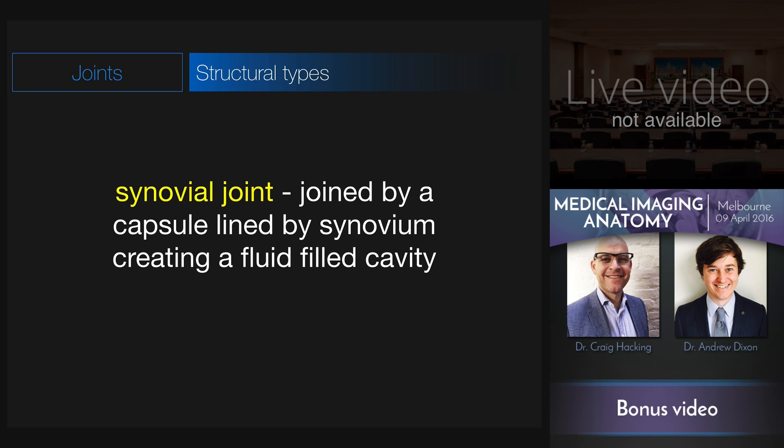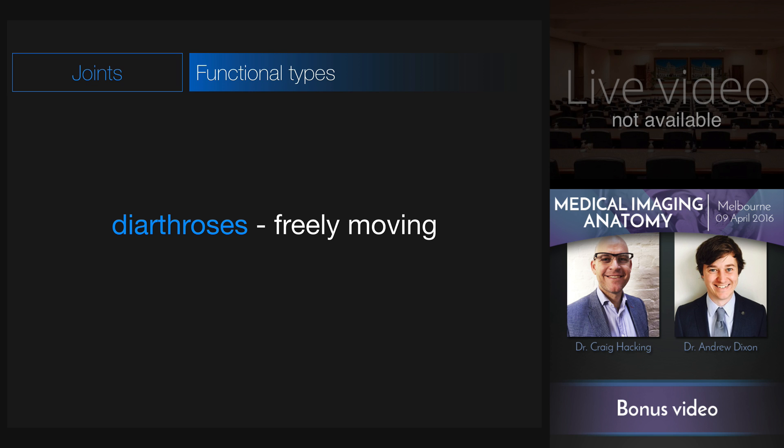Now let's move on to the final form of structural joint, the synovial joint. Synovial joints are joined by an articular capsule, which is lined by a synovial membrane that secretes fluid into the joint cavity. Synovial joints, functionally speaking, are considered diarthroses, in that they are freely mobile.